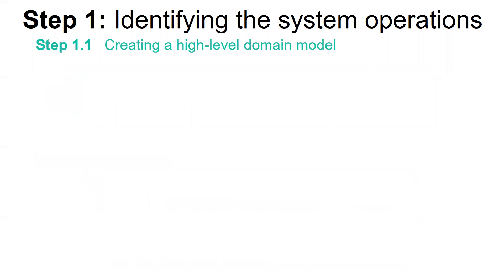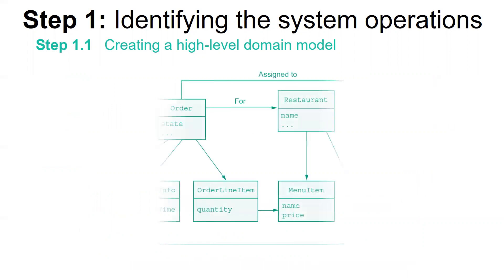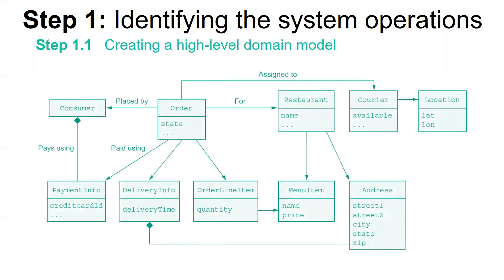After iteratively analyzing the other food-to-go stories, the end result will be a domain model that consists of the classes consumer, restaurant, and order, in addition to others as presented in this high-level class diagram.